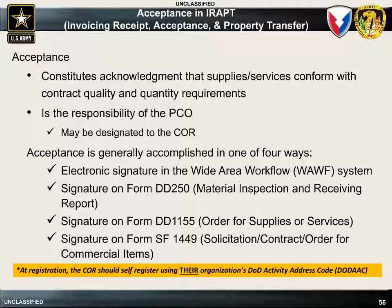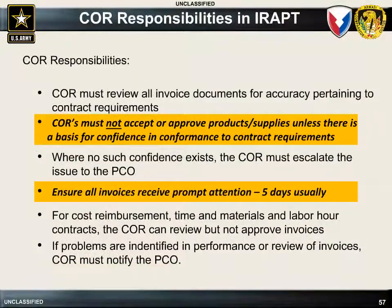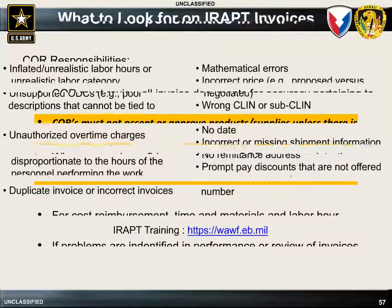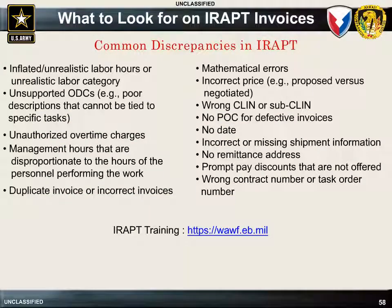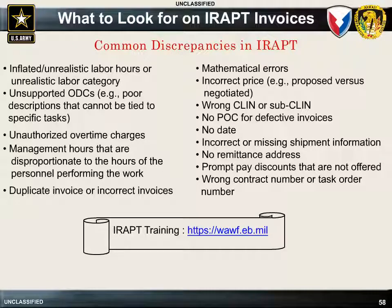The COR may be designated by the PCO to review and accept invoices submitted by the contractor using the WAWF module called Invoicing, Receipt, Acceptance, and Property Transfer, known as IRAP. Acceptance in IRAP constitutes acknowledgment that supplies or services conform to contract quality and quantity requirements. CORs shall ensure that all invoices are given prompt attention, usually within five days. The invoice should be reviewed for accuracy to the contract requirements, and if discrepancies are identified, the invoice should be rejected in IRAP and the PCO notified immediately. When the COR rejects an invoice, a description of the discrepancy is provided in IRAP, and the rejected invoice is automatically returned to the contractor for correction and resubmission. Further training on IRAP is available at the address listed on the slide.